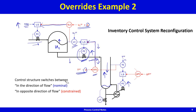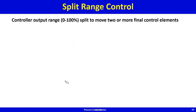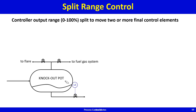Now let's look at split range control. A very common example: streams pass through a knockout pot where liquid condenses and collects, while non-condensibles accumulate as vapor. You knock out all the liquid and are left with non-condensible gas — typically hydrocarbons that can be used as fuel for furnaces and burners.